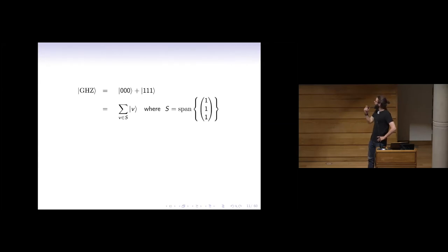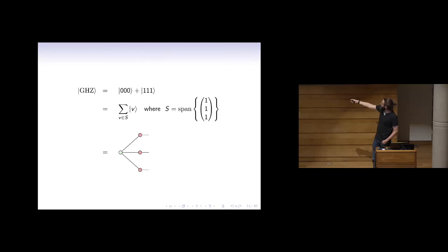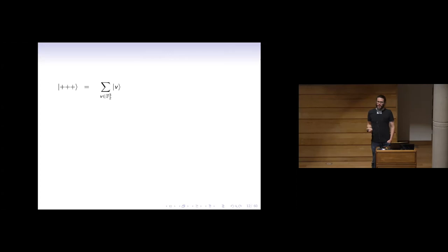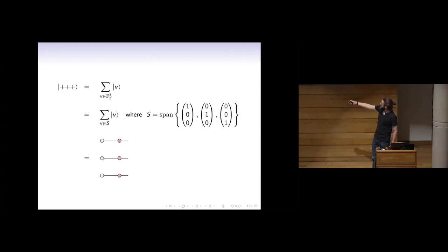Here's an example: the GHZ state. The GHZ state is a sum over the linear subspace spanned by the vector (1,1,1), which includes the origin and (1,1,1). If I write that in normal form, I get three red dots and a green dot representing that basis vector — a very familiar way to write the GHZ state in ZX. Another example: the plus product state is a sum over all bit strings in F2-to-the-3, spanned by the full space. Each basis vector becomes a green dot connected to each output — a green dot is the same as the plus state. These things are equal by the ZX calculus, even if you choose different spanning vectors for the same space.